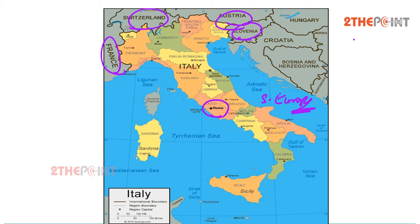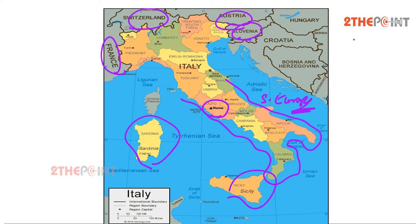To the south, it consists entirely of the Italian peninsula and the two Mediterranean islands of Sicily and Sardinia. These are the two biggest islands of the Mediterranean, and there are also many other smaller islands.